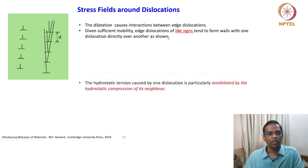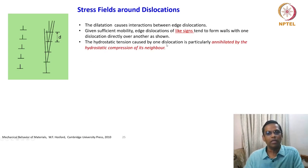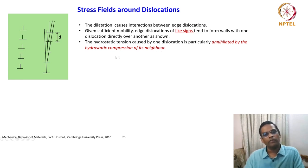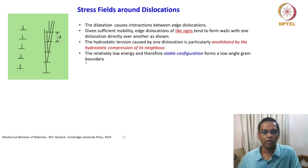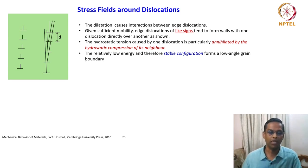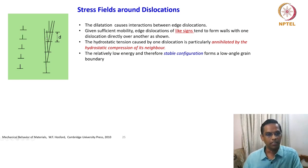Edge dislocations of like signs tend to form walls with one dislocation directly over the other. The hydrostatic tension caused by one dislocation is partially annihilated by the hydrostatic compression of its neighbour — this is compression and this is tension, so it just aligns. The relatively low energy and therefore stable configuration forms a low angle grain boundary — a very important idea. Looking at the stress fields around the dislocation already gives you a perspective of how boundaries form.